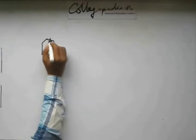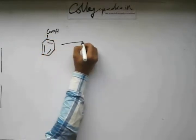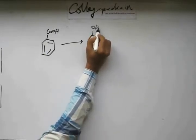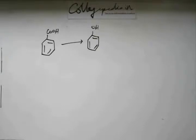Let's try this one: from benzoic acid you have to get phenol. The line of thinking will again be that somehow during the course of conversion, if you can reach a diazonium salt, then from diazonium salt we know how to prepare phenol — you just have to add warm water.